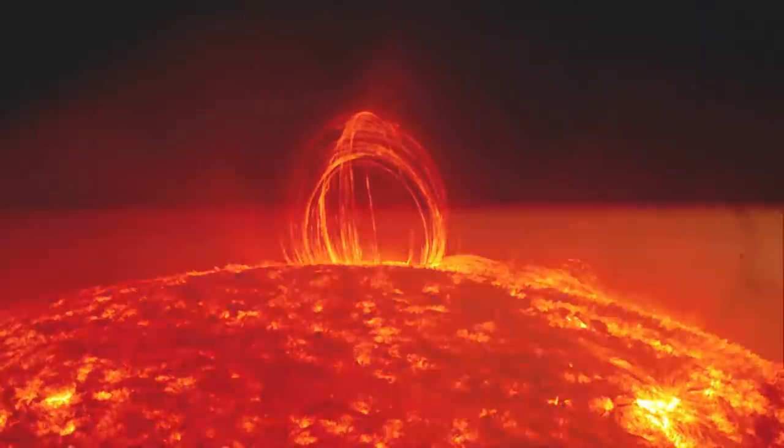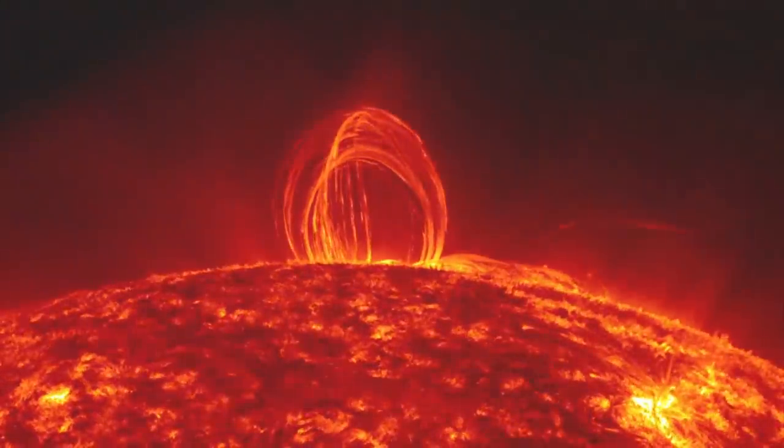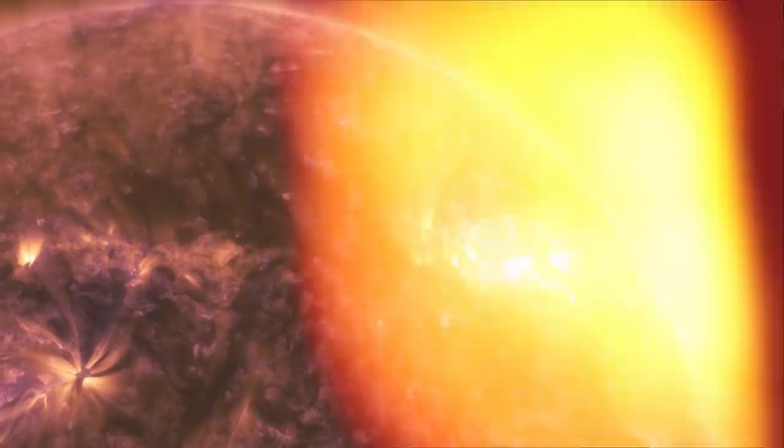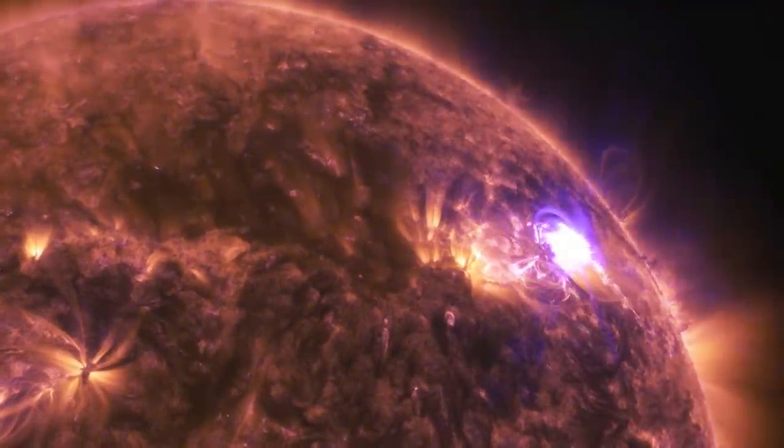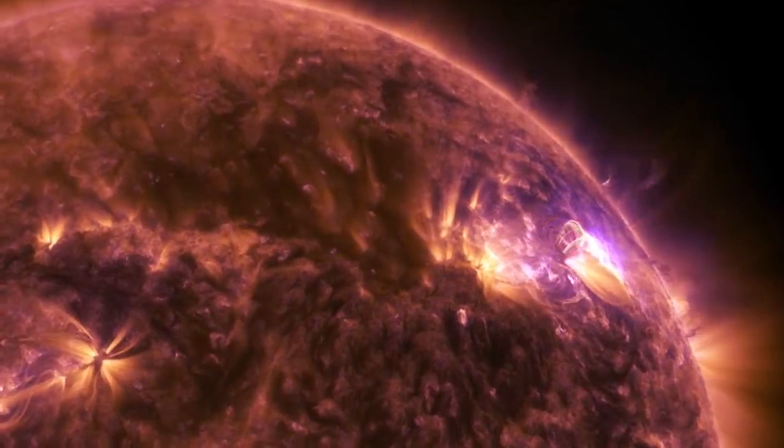Surprisingly enough, UY Scuti has already lost a significant amount of weight. Hypergiants can grow to a size more than 1,000 times greater than the Sun. However, UY Scuti, which is located in the constellation Scutum, is almost 1,700 times wider than the Sun.